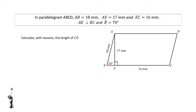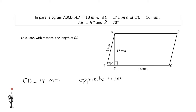Now, calculate with reasons the length of CD. Since I know that this is a parallelogram, I know that my opposite sides are going to be equal. Since AB is equal to 18 mm, CD would also be equal to 18 mm, and therefore I write that CD is equal to 18 mm. Reason: opposite sides of a parallelogram are equal.